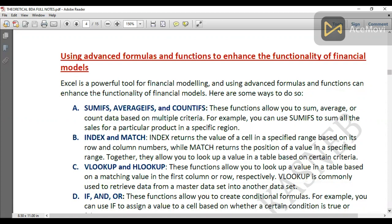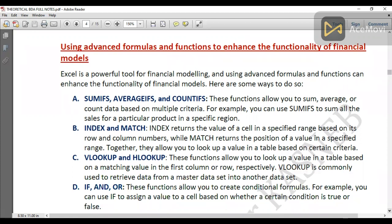VLOOKUP and HLOOKUP allow you to look up values in a table based on matching values. VLOOKUP is commonly used to retrieve data from a master dataset. VLOOKUP is for vertical and HLOOKUP is for horizontal. Advanced Excel also has XLOOKUP which works both vertically and horizontally. IF, AND, and OR are three formulas that allow you to create conditional formulas. For example, you can use IF to assign a value to a cell based on whether a certain condition is true or false.